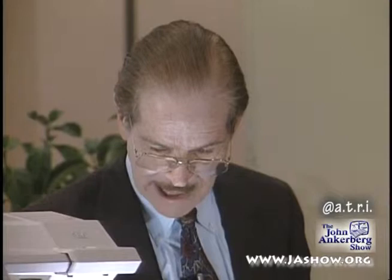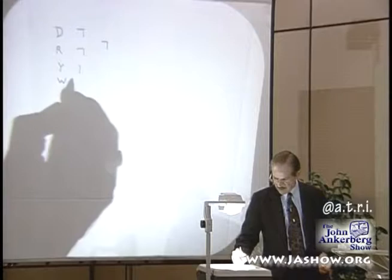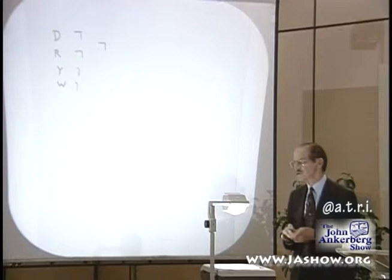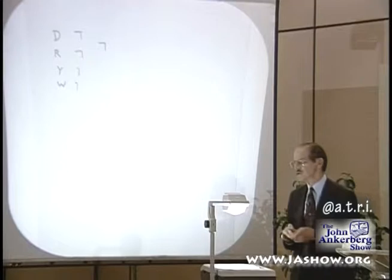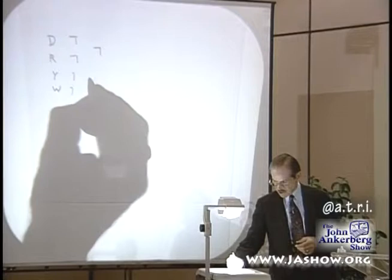Another problem has to do with the similarity between a Y and a W. The Y is written like this — it's a vertical with a little curved thing at the top, and it has a short tail. The W has a longer tail. Particularly during the time of the Dead Sea Scrolls, say in the 2nd century B.C., the similarity was so great — this would be the typical Dead Sea Scroll Y, and this would be the typical Dead Sea Scroll W.